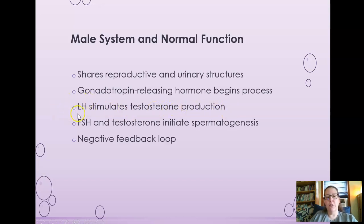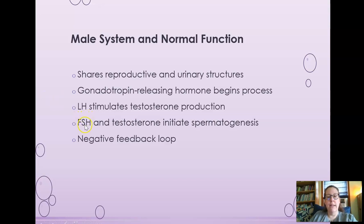In the female, LH causes the follicle to become the corpus luteum, which produces progesterone. So LH after its peak causes the production of the corpus luteum, which gives the increase in progesterone. FSH, follicle-stimulating hormone, in males along with testosterone initiates the production of sperm — spermatogenesis.